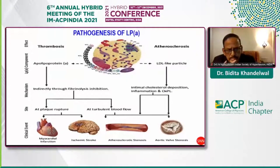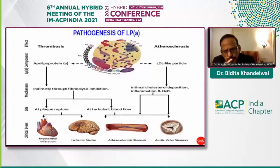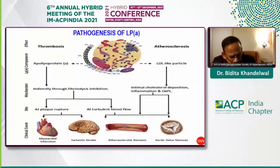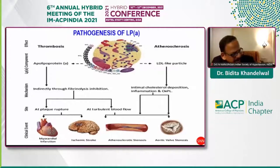In addition, apolipoprotein(a) mediates pro-atherogenic effects and creates atherosclerotic stenosis as well as aortic valve stenosis. The LDL-like particle with Apo B moiety closely bound to Apo(a) causes endothelial dysfunction. Inflammation is mediated by oxidized phospholipids, for which lipoprotein(a) is a carrier, producing atherosclerotic stenosis of blood vessels and atherosclerotic changes in the aortic valve, ending in aortic valve stenosis.